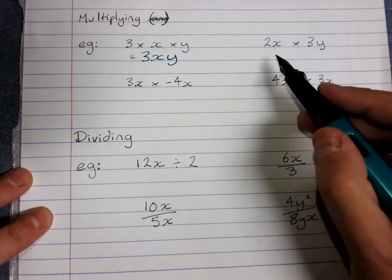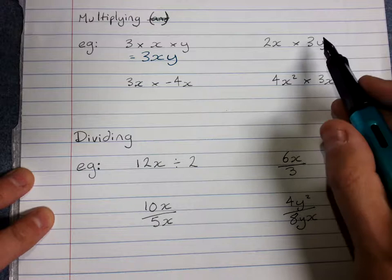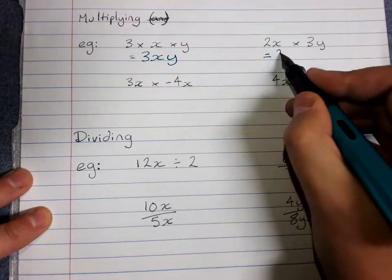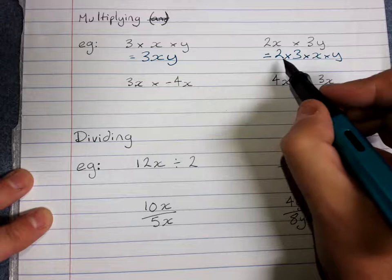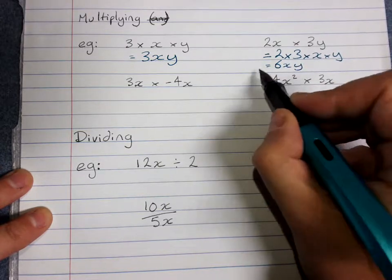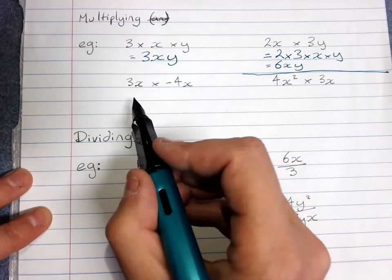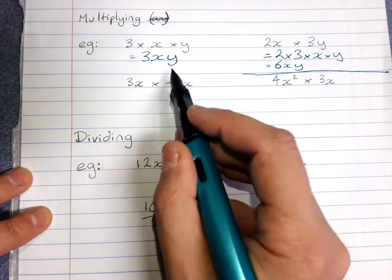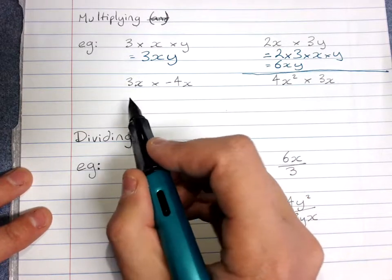2x times 3y. Now really the easiest way to do this is to deal with the numbers first. The big numbers in front. And then deal with the letters. And you can even rearrange it if you want. Because this is 2 times x times 3 times y. We're going to do 2 times 3. We're timesing the big numbers together. And then do times x times y. Now the numbers 2 times 3 you can do. That's going to be 6. Then x, y. Here, 3x times negative 4x. You're going to multiply together the big numbers. And then you'll multiply x times x. And that's going to be x squared. Because x times x is x squared. We can do that.